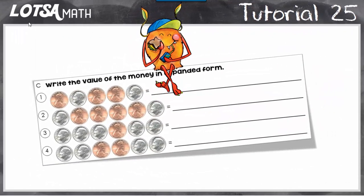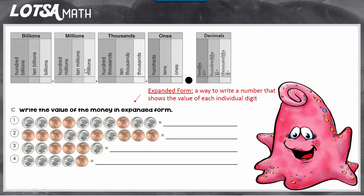For these questions, we're going to show the value of money in expanded form. So we're going to find the value of the money by counting the money and then writing it in a way that will show the value of each individual digit.